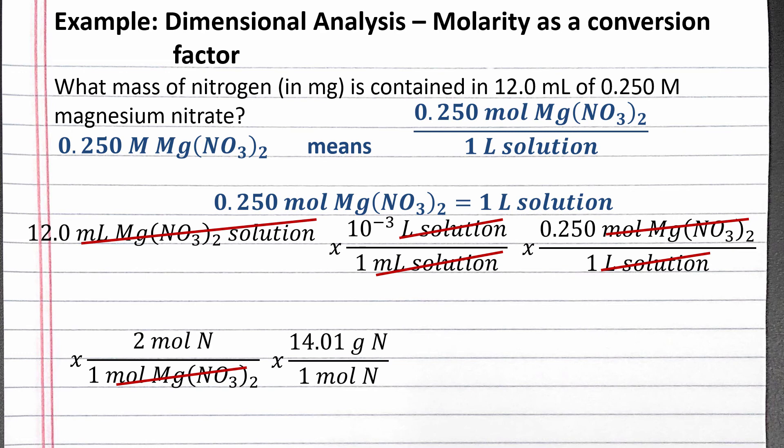Our last step is to use the definition of milli again to convert from grams of nitrogen to milligrams of nitrogen. Completing the calculation, we get 84.1 milligrams nitrogen.